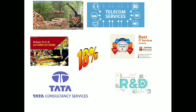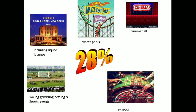28% is essentially a luxury or entertainment tax. It covers amusement parks including water parks, cinema halls, five-star hotels including liquor licenses, casinos, racing, gambling, betting, and sports events. Any event management or conduct related to these activities will be taxable at the rate of 28%.